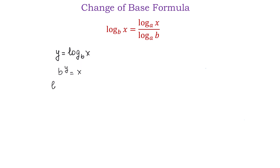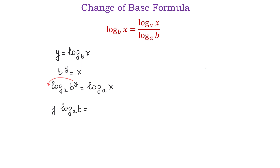On the left side we will have log base a of b to the power of y, and on the right side we will have log base a of x. On the left side we will use the power rule and we will move the exponent y in front of the logarithm. Then we will have y times log base a of b equals log base a of x. Then we will solve for y by dividing both sides by log base a of b, and on the left side log base a of b will cancel.